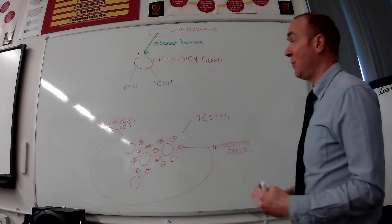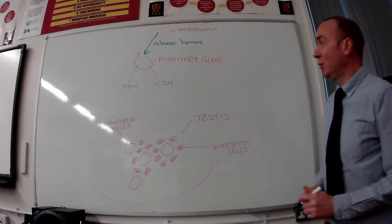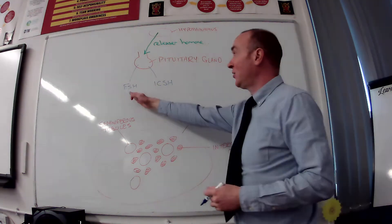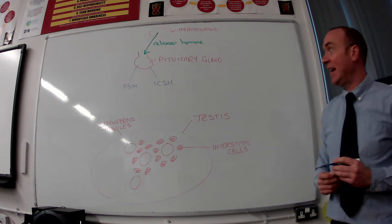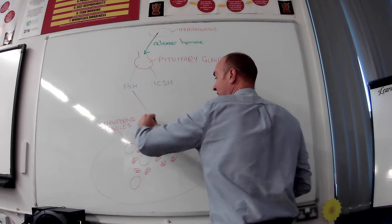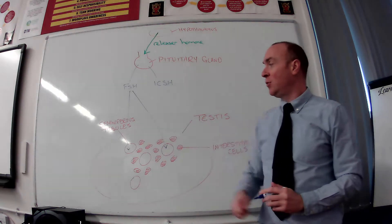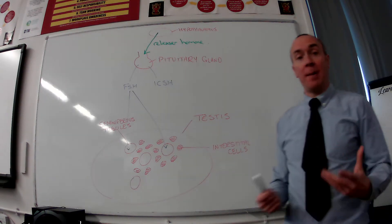But you must remember at least the letters, remember what they stand for, that's perfect too. So we'll follow what FSH does first of all, then we'll look at what ICSH does. The FSH is fairly simple. It basically acts directly onto structures in the testis called seminiferous tubules and it triggers sperm production.